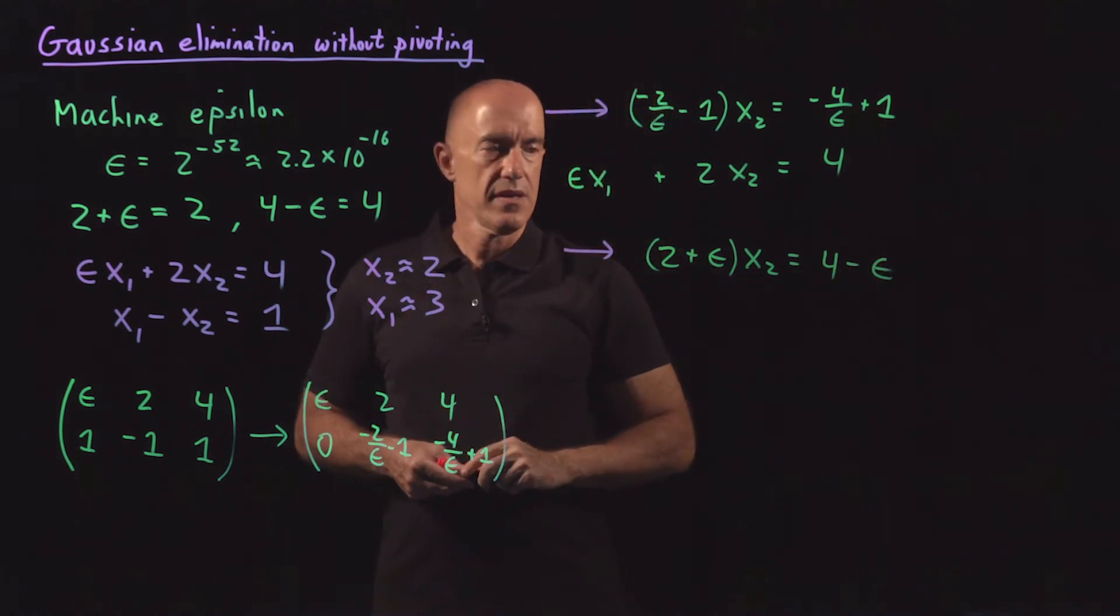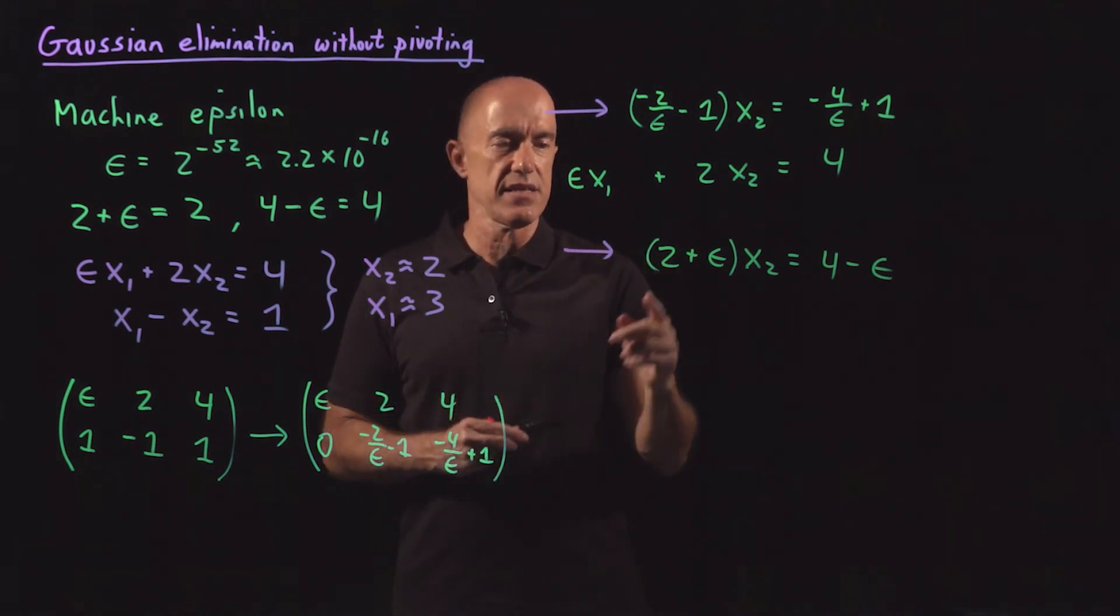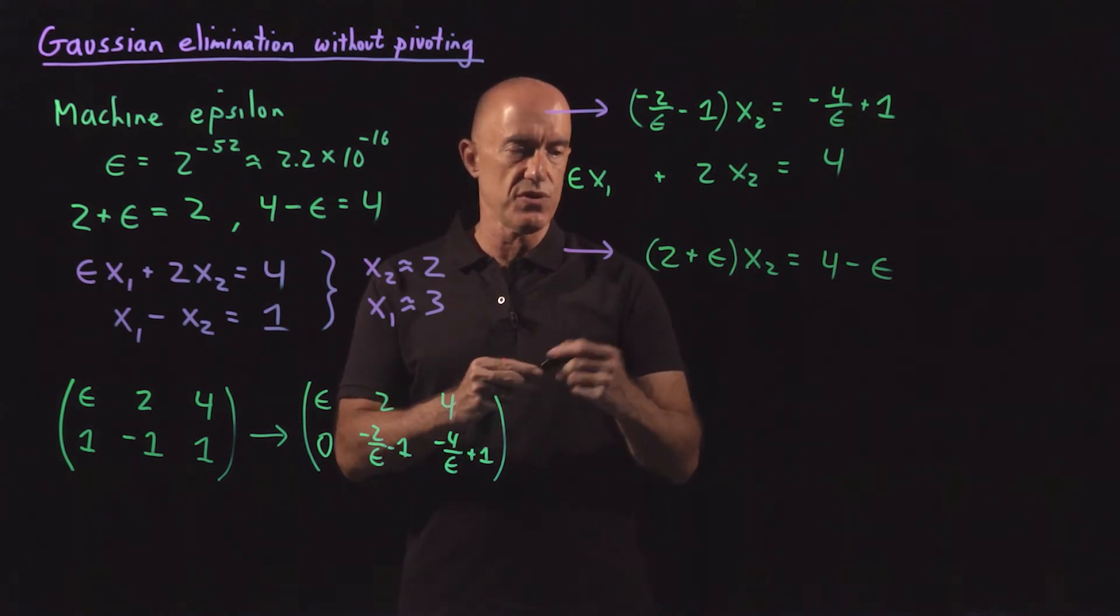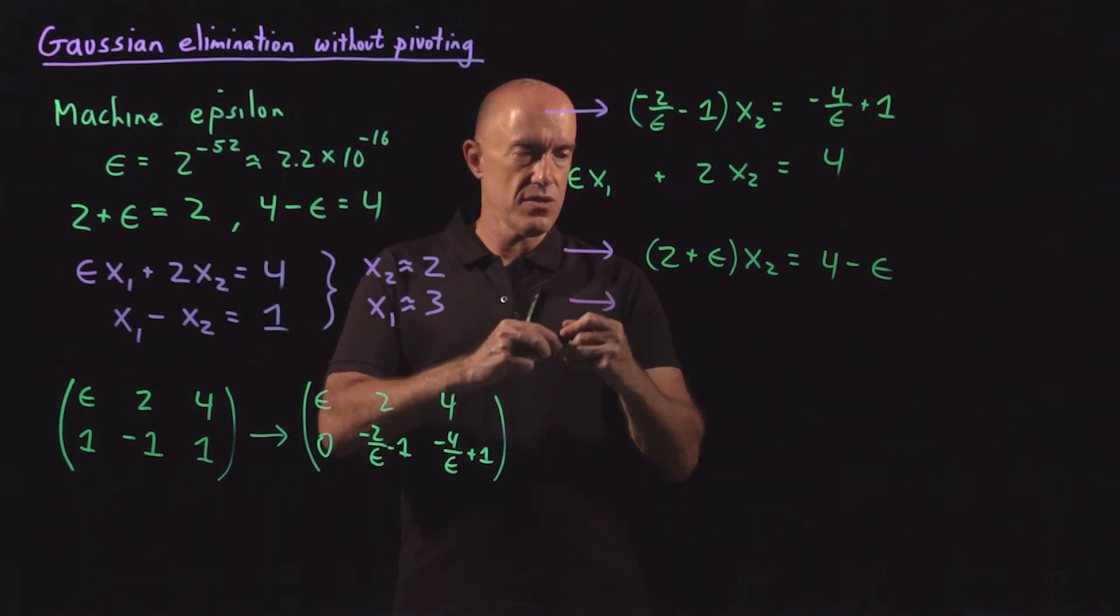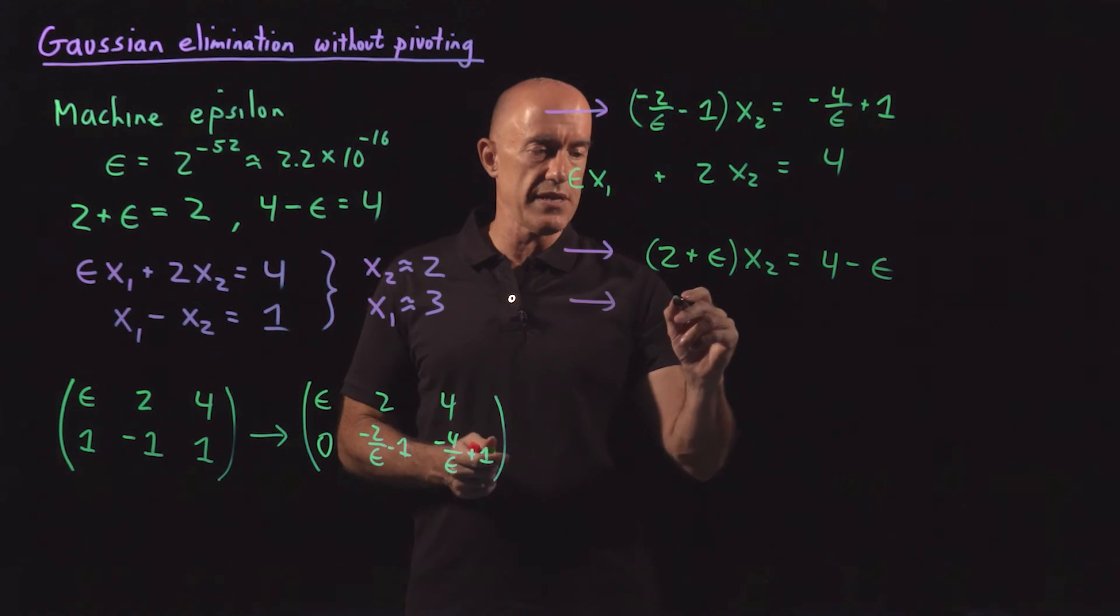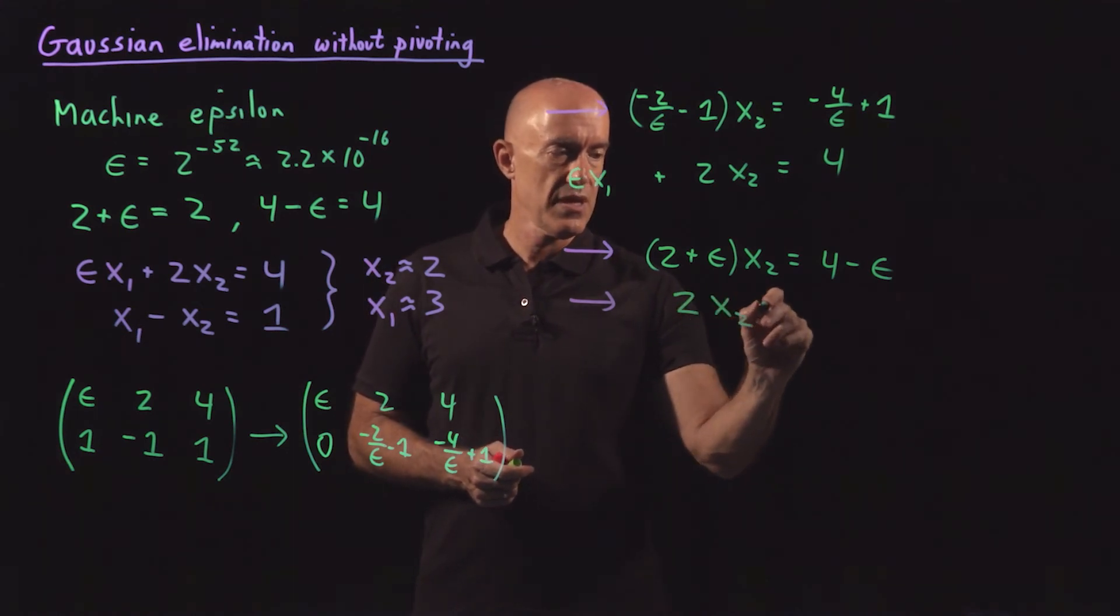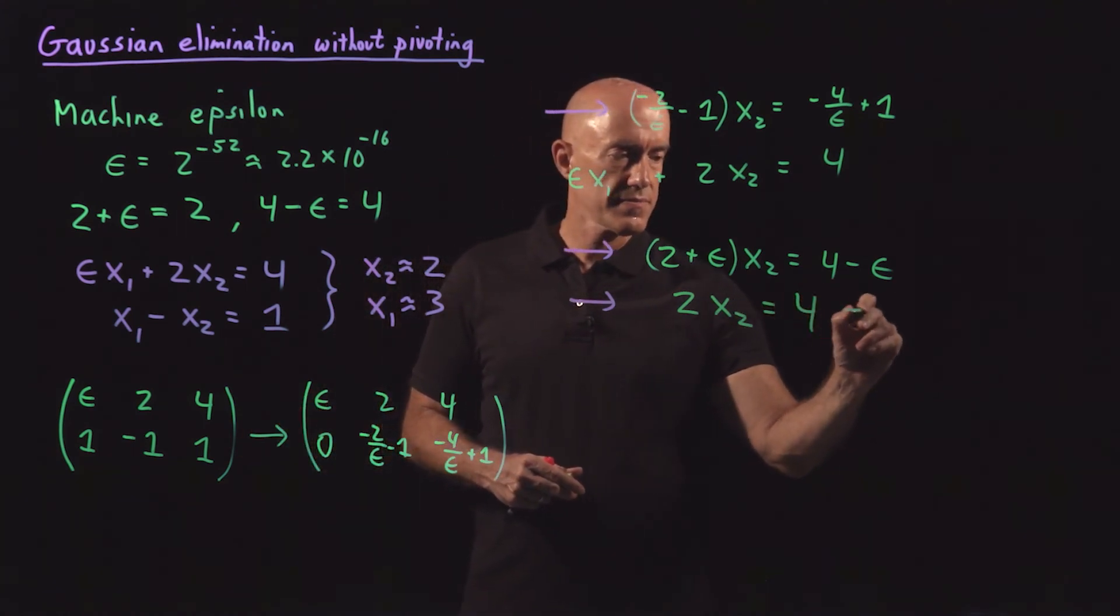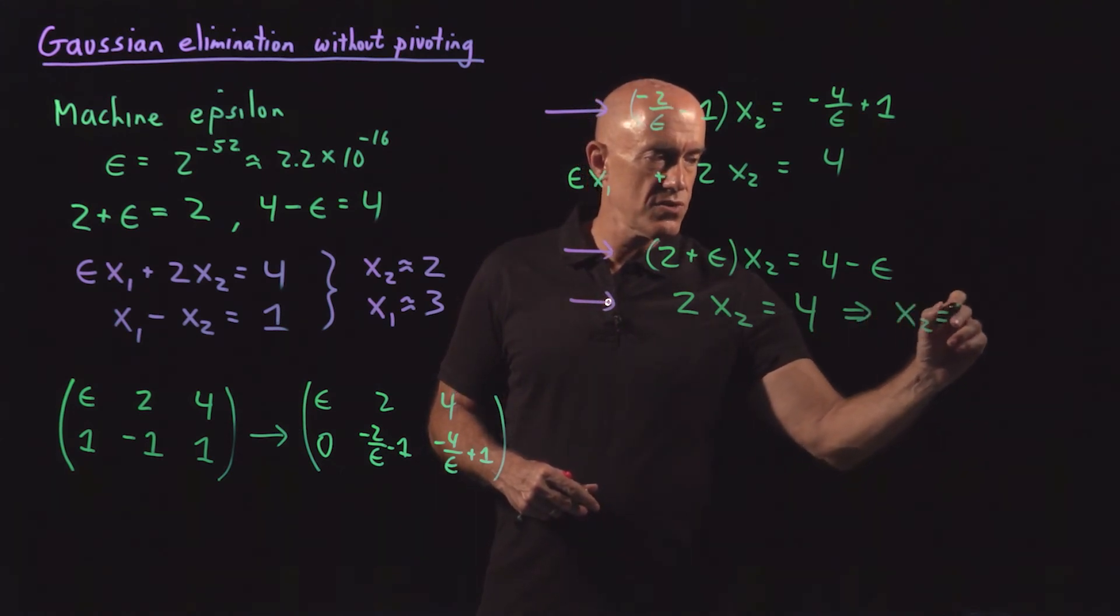So because these equations are contrived, I've put myself exactly in the situation where 2 plus epsilon equals 2. So this one will then give us, using machine arithmetic, 2 plus epsilon equals 2. So this is 2 times x2. And 4 minus epsilon equals 4. So this is 4. So immediately we get x2 is equal to 2.